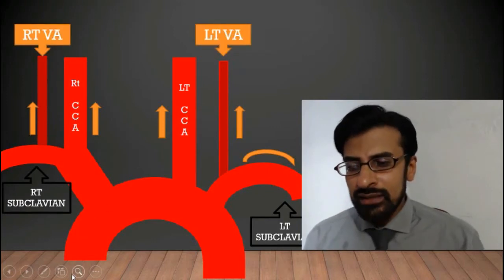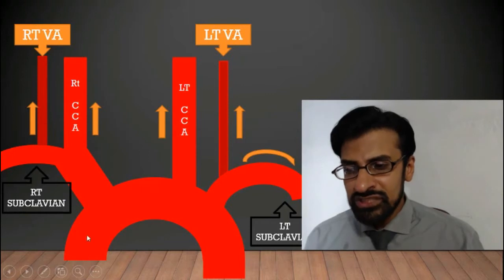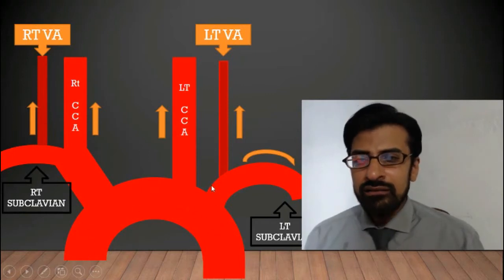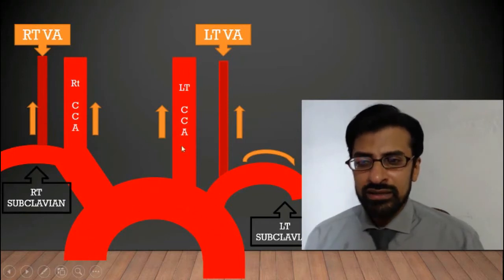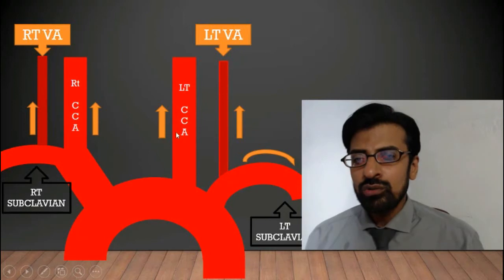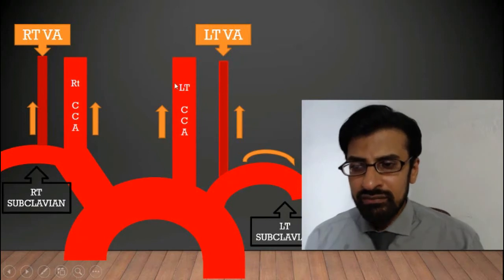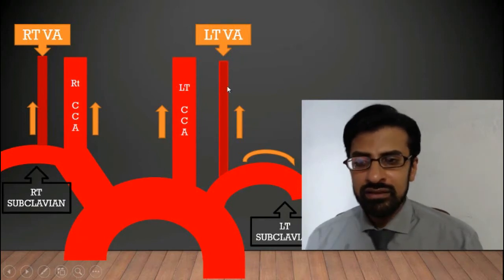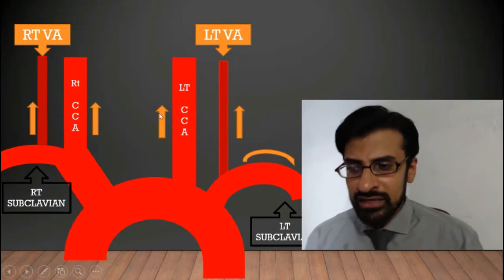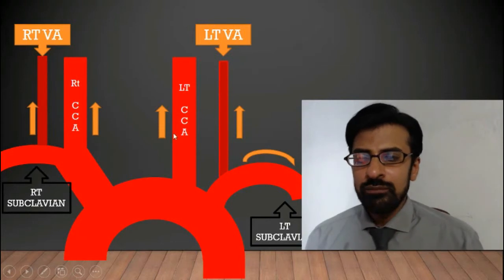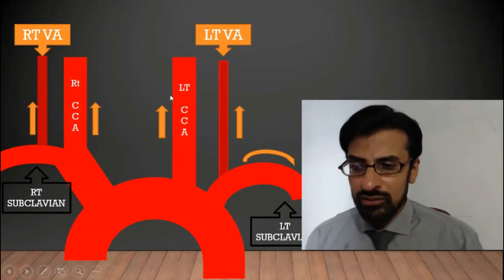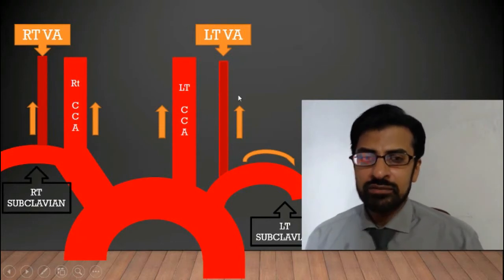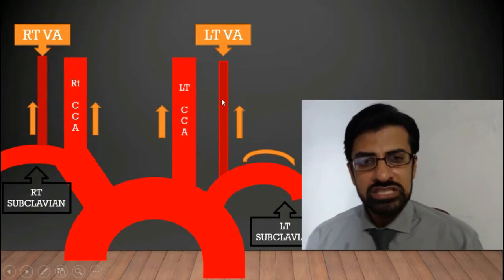When the heart pushes blood within the arch of the aorta, blood reaches the brain through the common carotid artery as well as the vertebral artery. So the direction of blood flow in both the common carotid artery and the vertebral artery is the same.